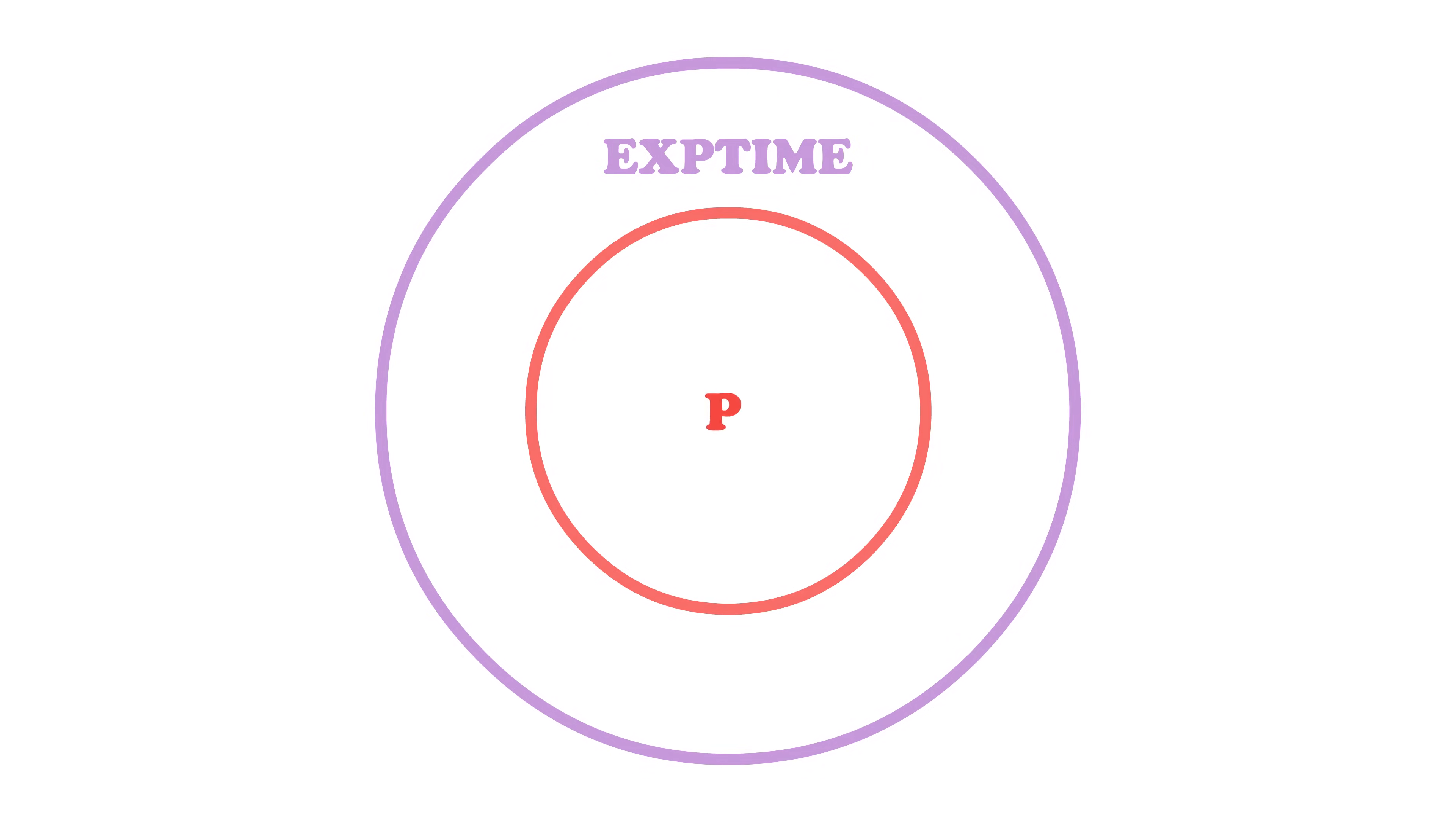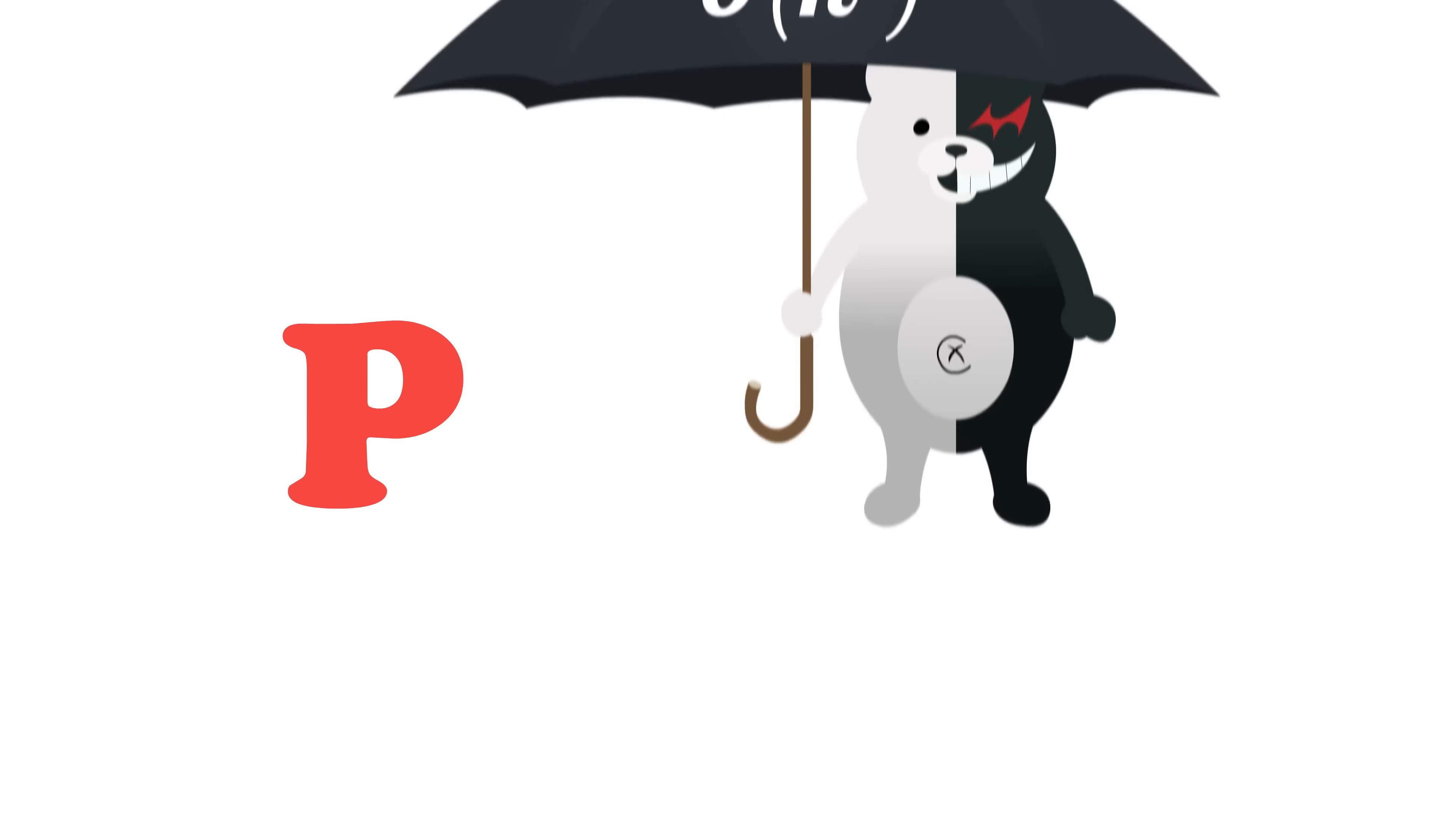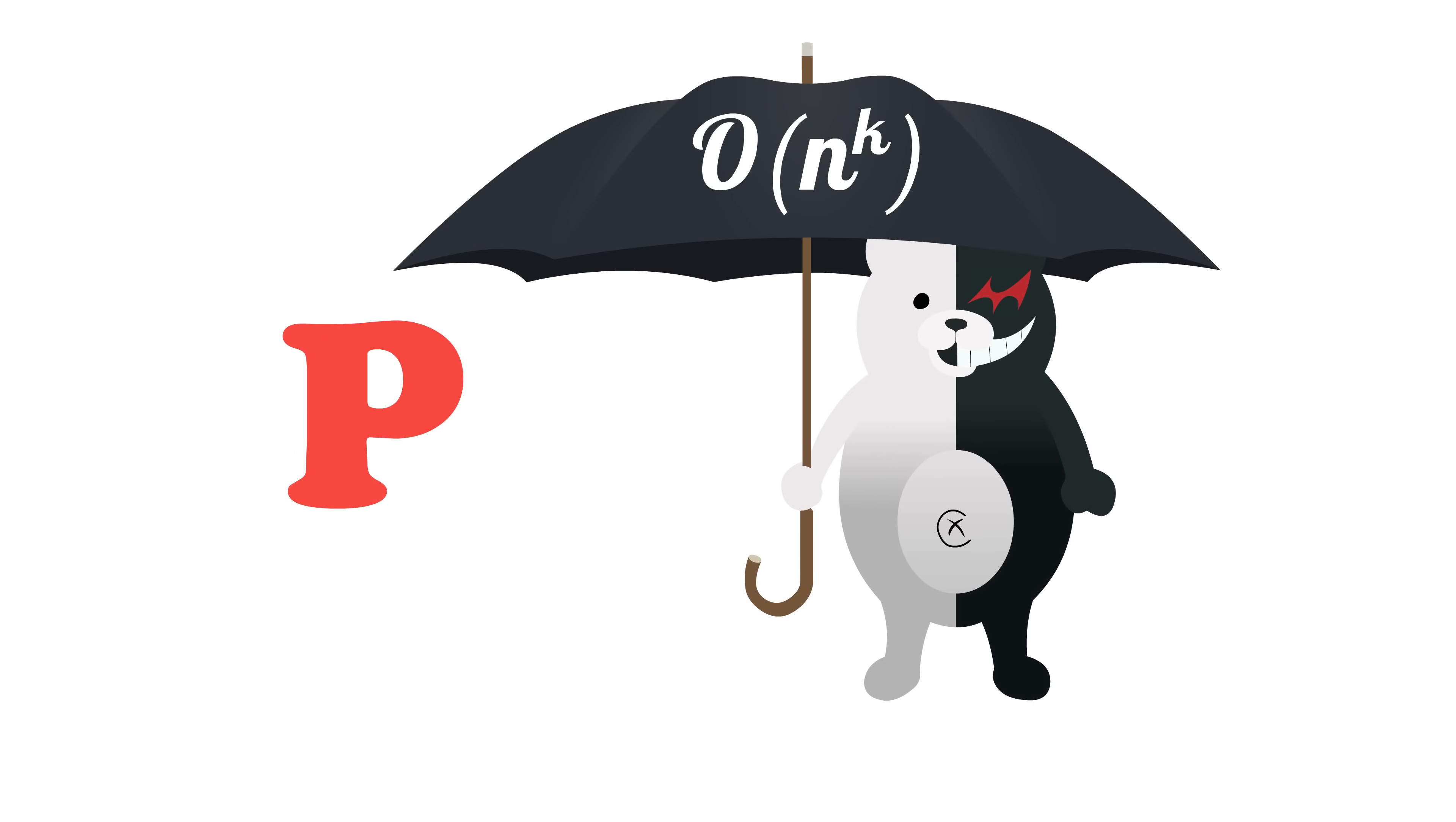As a reminder, P is the set of decision problems that we can solve with a deterministic algorithm in polynomial time. We like to shorthand this as the set of problems that are easy to solve.